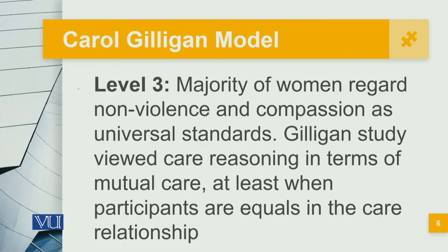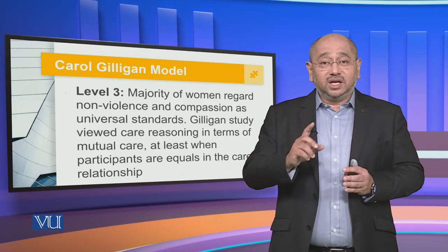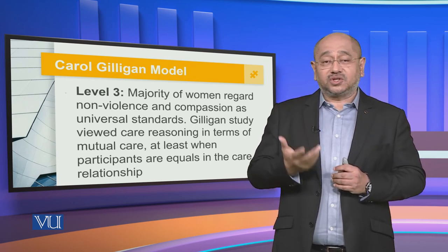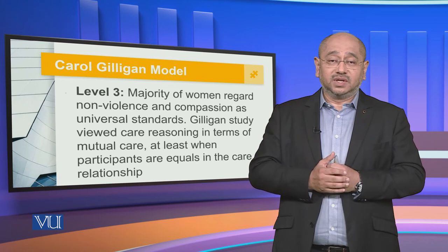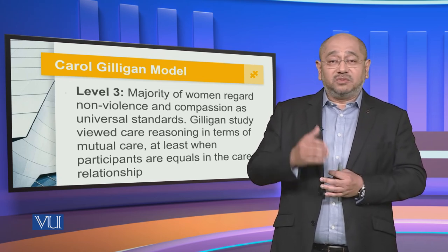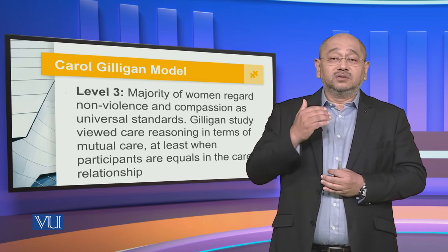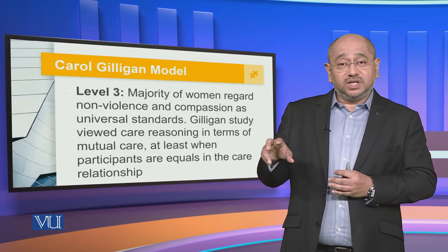At Level Three, the majority of women regard non-violence and compassion as universal standards. The Gilligan study viewed care reasoning in terms of mutual care, at least when participants are equal in the care relationship. Care cannot be a one-way approach — it has to be mutual. There must be mutual empathy and mutual sympathy. When talking about females, they have a stronger emotional connection and a stronger bearing on relationships, which influences them in the family, in the community, and in institutions.